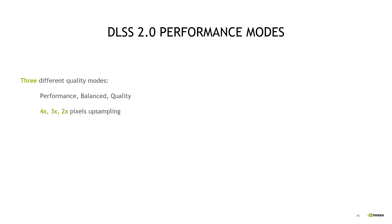Now let's look at the performance side of DLSS 2.0. Because DLSS now supports up to 4x pixel scaling, we can be really flexible and provide users with a list of configurations offering different trade-offs between performance and image quality. We're providing three different quality modes: performance, balanced, and quality. Performance means 4x pixel upsampling, balanced is 3x, and quality is 2x.